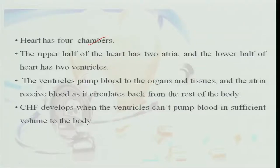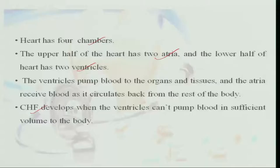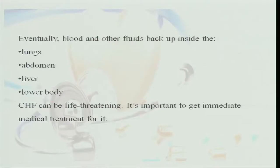The heart has 4 chambers: the upper half has 2 chambers called atria, which receive blood from the entire body, and the lower half has 2 ventricles, which pump blood to the organs and tissues. Normally, about 120 ml of blood is in the ventricles, and each contraction pumps about 80 ml into circulation. The heart beats approximately 70 times per minute; when the ventricles stop pumping effectively, congestive heart failure develops.